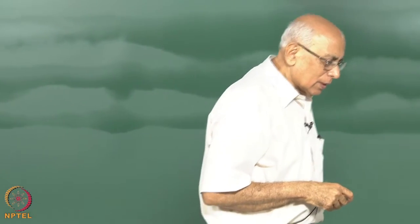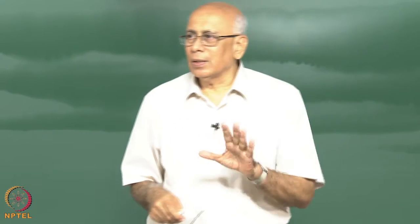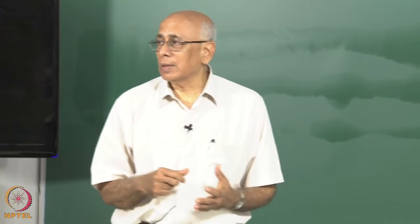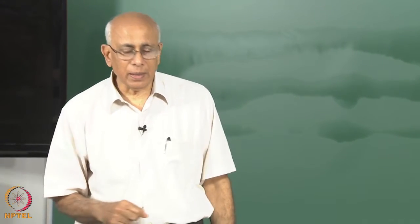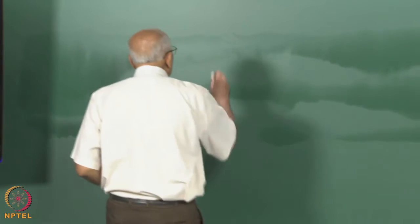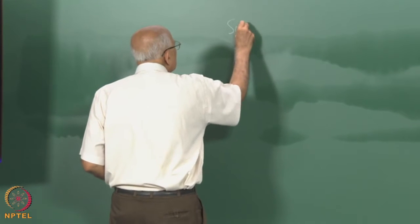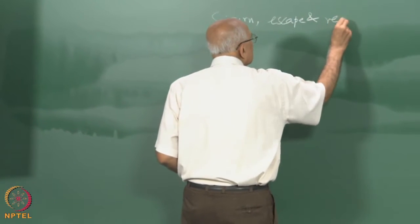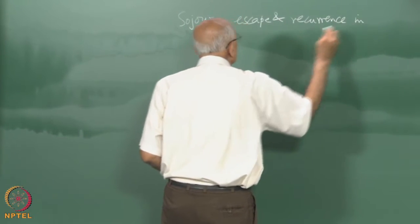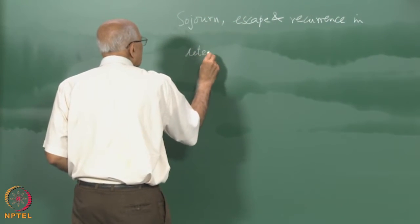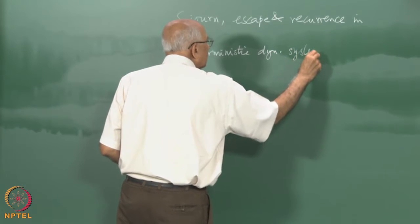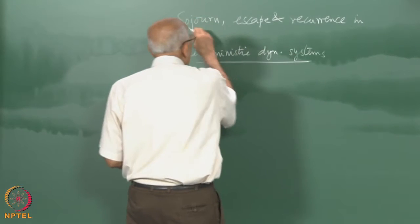Today let us turn to a topic of some importance in the study of dynamical systems. I want to show you how probabilistic methods help you discover things about complicated dynamical systems, in particular systems where the dynamical behavior is perhaps chaotic. The specific things I want to discuss are sojourn, escape, and recurrence in deterministic dynamical systems.